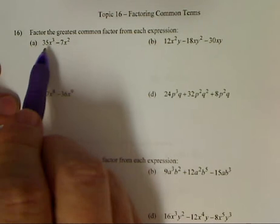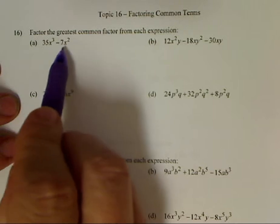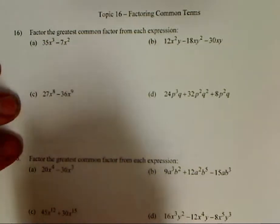So I want to find the biggest thing first of all for the numbers. So 7 goes in 35 so I can take out a 7. And then at least the biggest x's I can take out. I can take out an x squared.